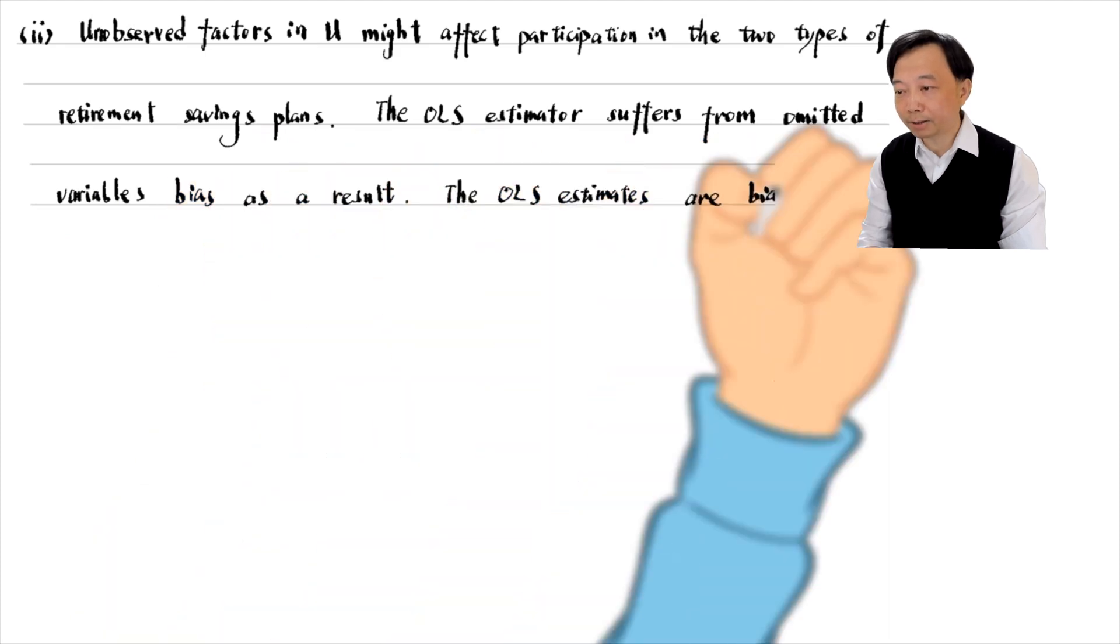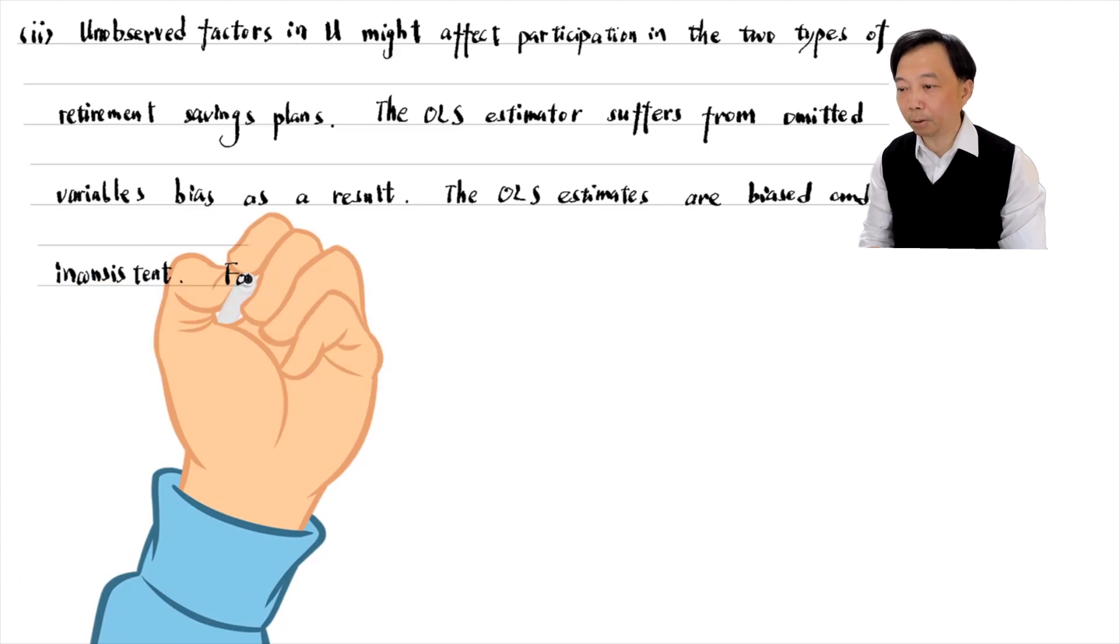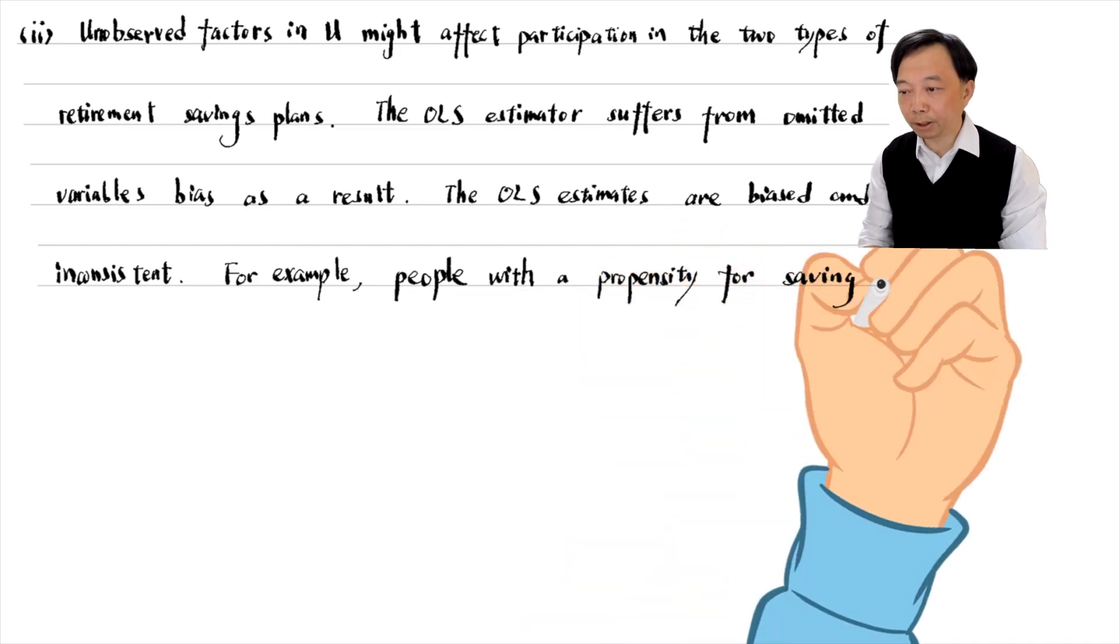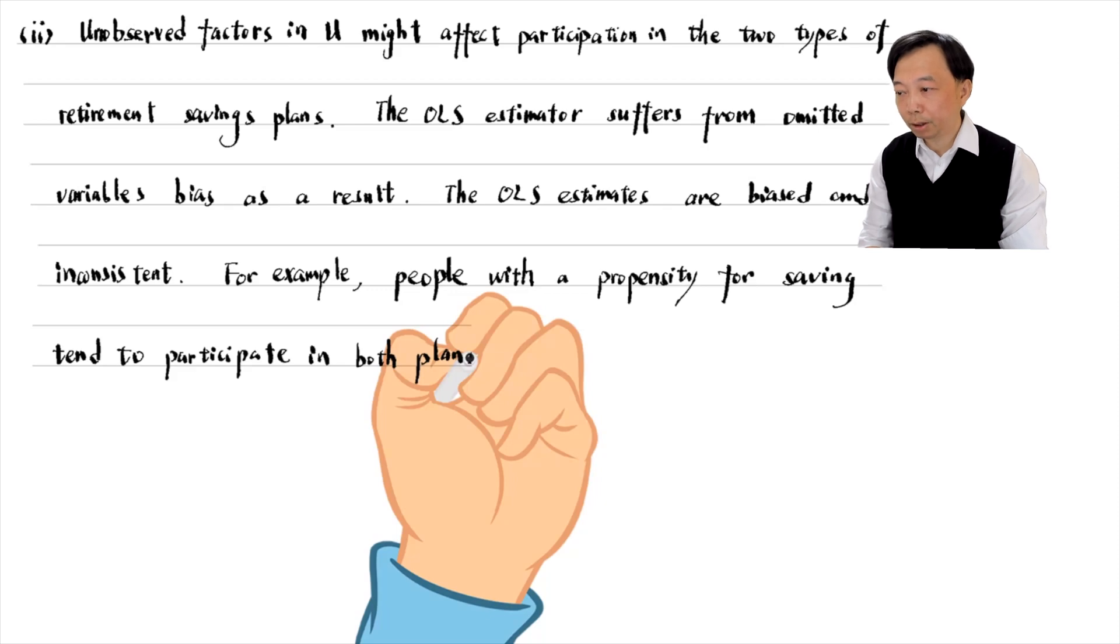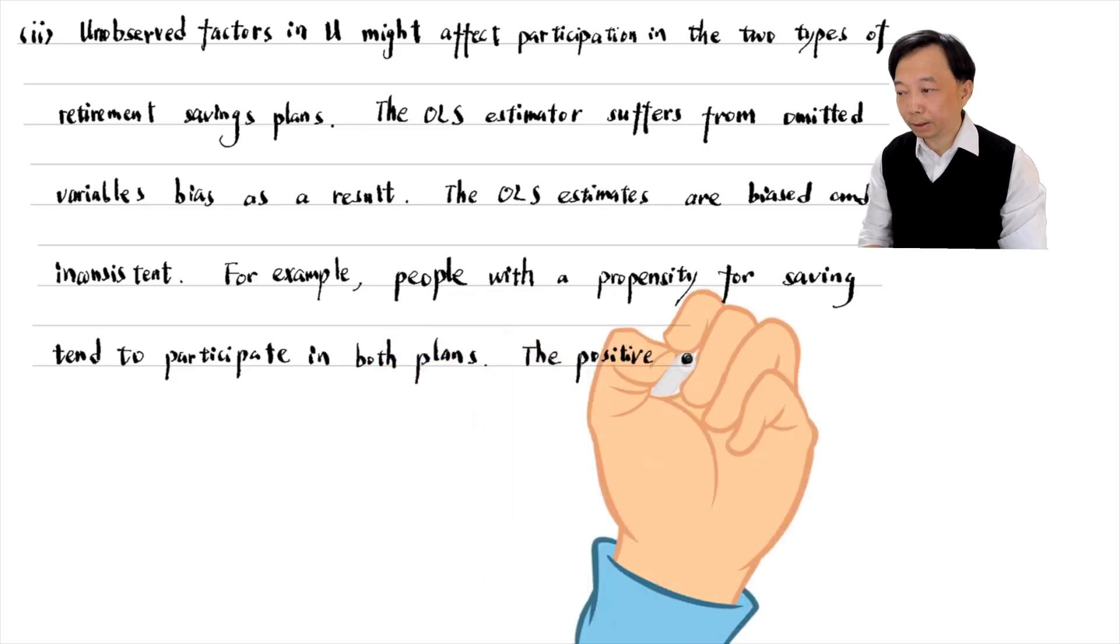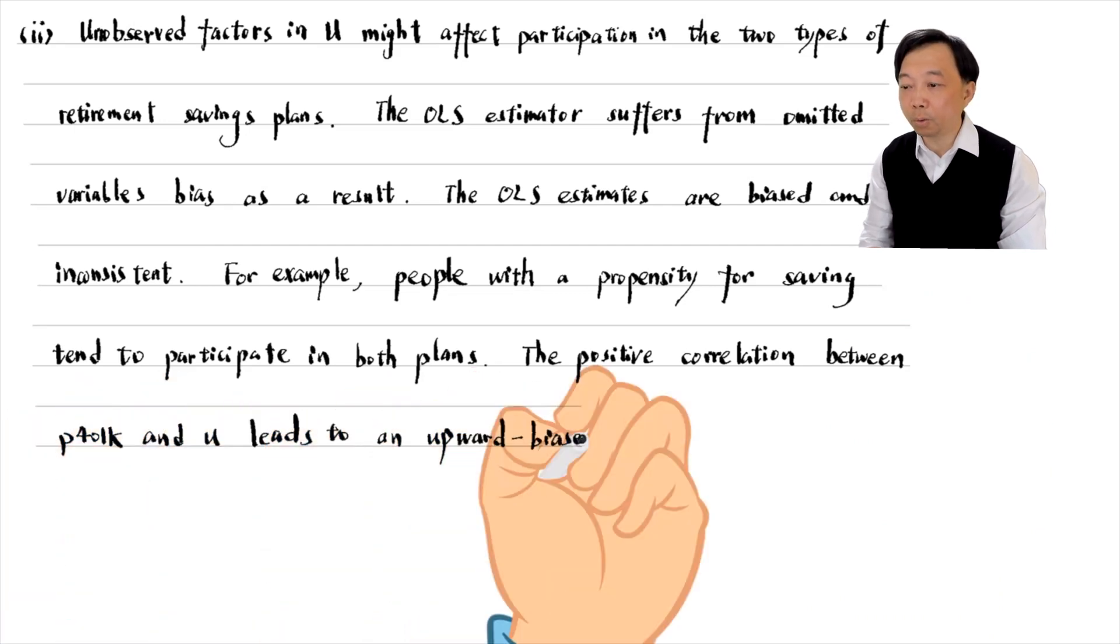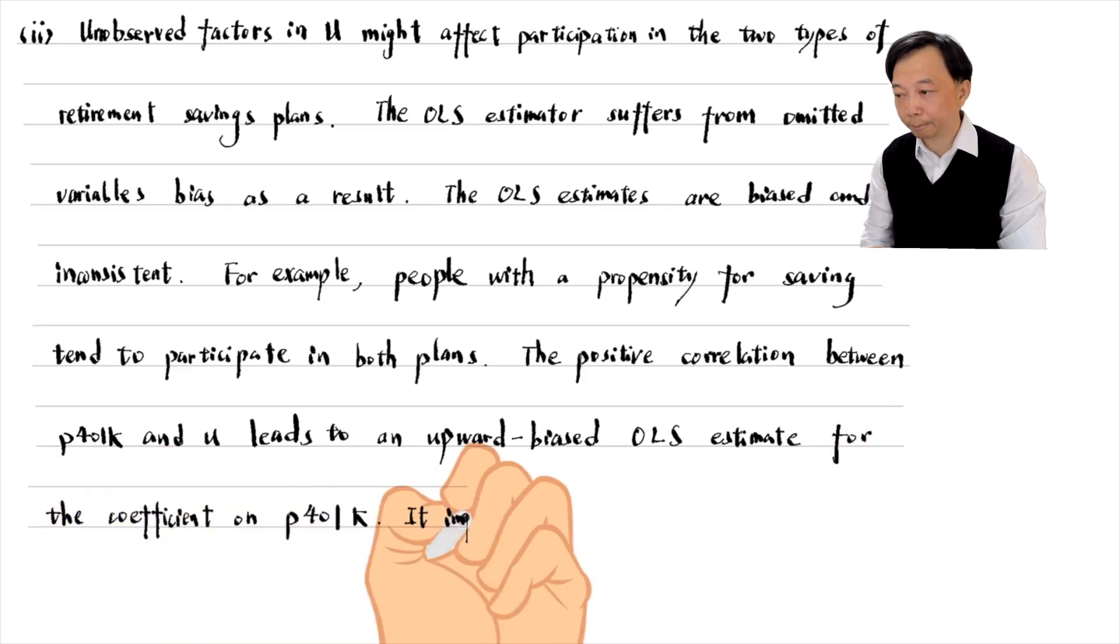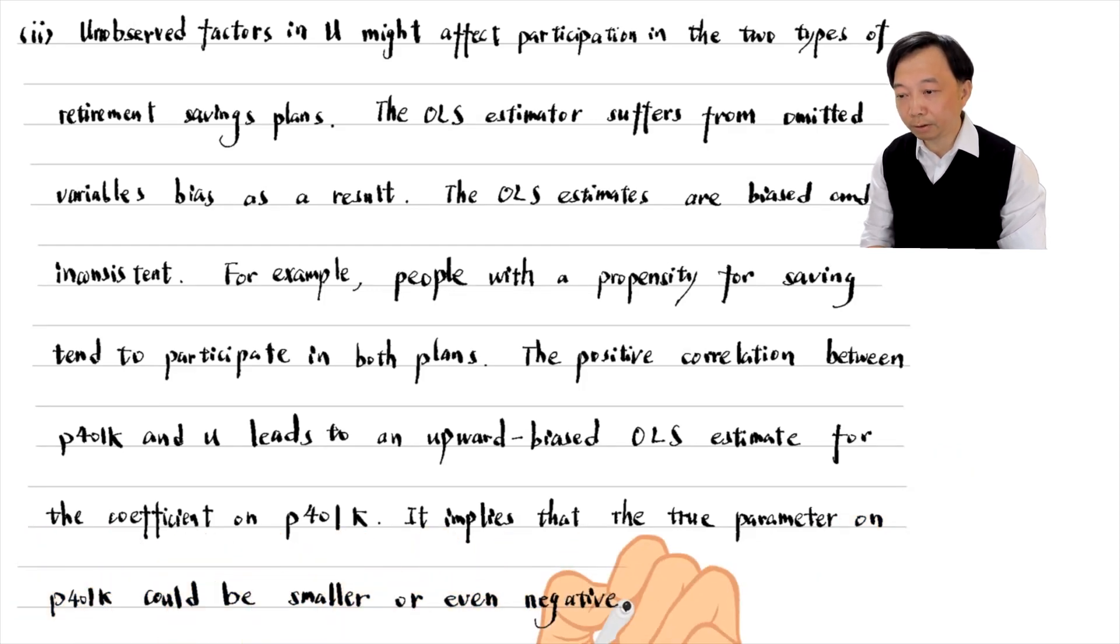The OLS estimates are biased and inconsistent. For example, people with a propensity for saving tend to participate in both plans. The positive correlation between P401k and the error term leads to an over-biased OLS estimate for the coefficient on P401k. It implies that the true parameter on P401k could be smaller or even negative.